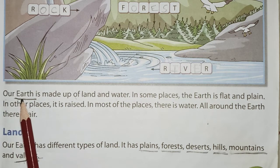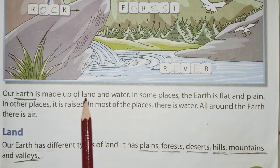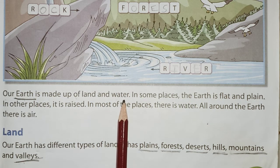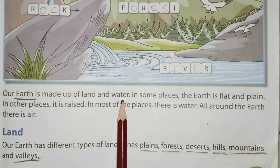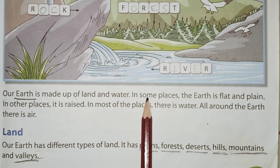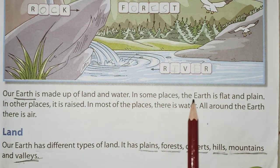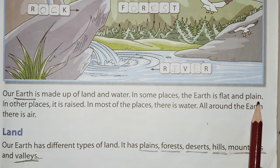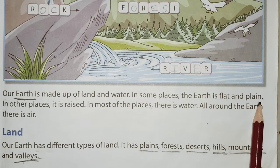Our Earth is made up of land and water. The entire Earth is made up of only two things: land and water. We have less land and more water. In some places the Earth is flat — plains where we can build our houses or do farming. Cities are built generally in plain areas.